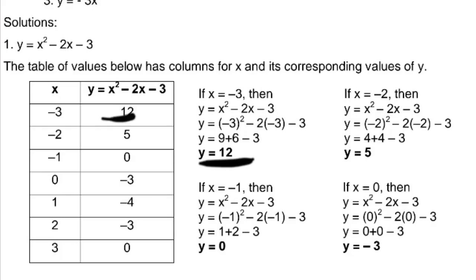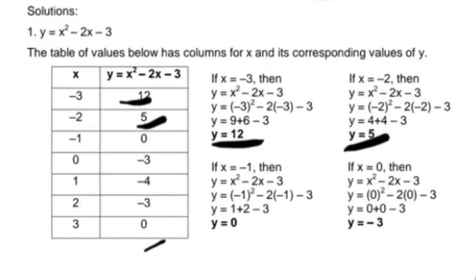If x is negative 2: negative 2 squared is 4, negative 2 times negative 2 is 4, then minus 3 — 4 plus 4 is 8, minus 3 is 5. If x is negative 1, y equals 0. If x is 0, y equals negative 3. If x is 3, y equals 0. This completes the table of values for y equals x squared minus 2x minus 3.